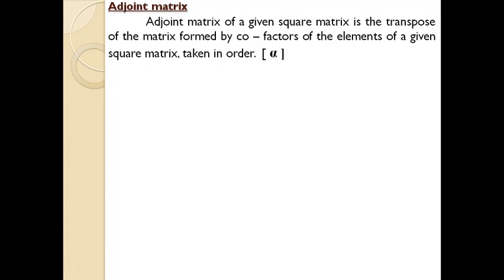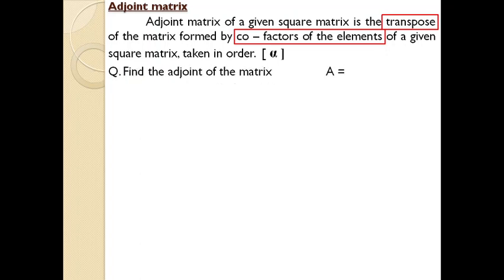I hope you now have a vague idea about the concept. With an example, you will get a clearer picture. Remember, regarding the adjoint: you need to find the cofactors of each element and note them in a new matrix. Then take the transpose of that new matrix. The resulting matrix is known as the adjoint. Let us discuss with an example.